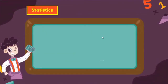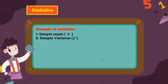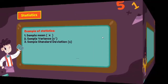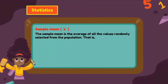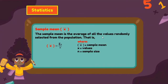Now for the term statistics. Examples of statistics include: sample mean, sample variance, and sample standard deviation. The sample mean is the average of all values randomly selected from the population. The formula is x̄ = Σx / n, where x̄ is the sample mean, x is the given data or values, and n (lowercase) is the sample size.